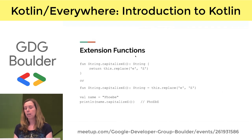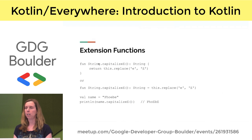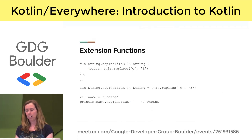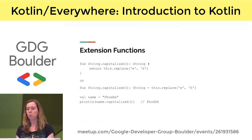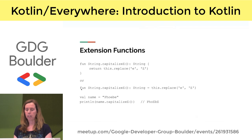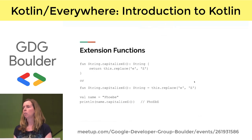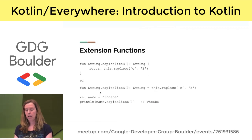Extension functions are pretty cool — they let you extend a class with your own functionality. For example, adding a function to the string class. The declaration looks like a normal function except you prefix it with the class name and a dot before the function name. If it's a one-liner, you can treat the function as a value to be assigned rather than using curly braces. Once declared, you can call that function on any string as if it were part of the class the whole time.